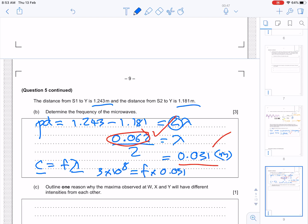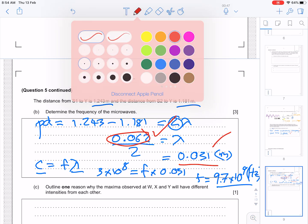So, we can write 3 times 10 to the 8 equals F times by 0.031. I'm running out of space slightly. Apologies for that. That gives us a value of F equals 9.7 times 10 to the 9 hertz. And that is our third marking point.